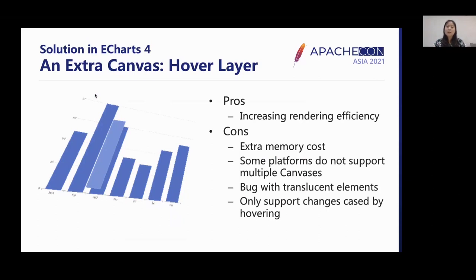But its disadvantages are also worth considering. First, it has extra memory cost since it uses an extra canvas — if there are many charts using hover layers on the same page or on a low-cost mobile device, it may cause noticeable efficiency problems. Second, there are platforms that do not support multiple canvases, like WeChat mini program, so we cannot use an extra canvas for the hover layer. Third, since the original element is not cleared in the main canvas, it may cause rendering bugs if the modified elements are translucent, in which case we can still see the old elements beneath.